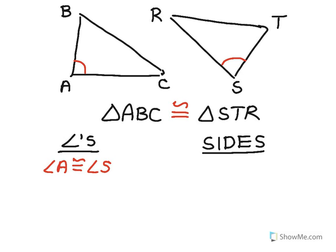And then we have angle B, the second letter in the first triangle when I've listed it will correspond to angle T in the second triangle. So angle B congruent to angle T.